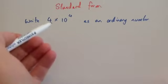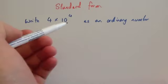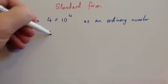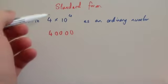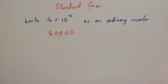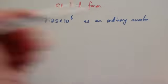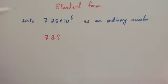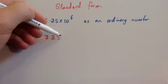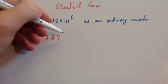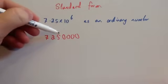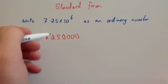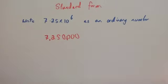If you need to do 4 times 10 to the 4 and write that as an ordinary number, you would move the decimal place four places to the right. But obviously there's no decimal point shown, so you can just put on four zeros: 4 times 10 to the 4 is 40,000. This time we've been asked to write 7.25 times 10 to the 6 as an ordinary number. Start off with 7.25, and we move the decimal place six places to the right — move it two places to get past the 5, then add on four zeros. So 7.25 times 10 to the 6 is 7,250,000.